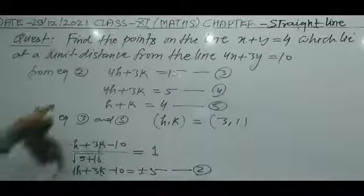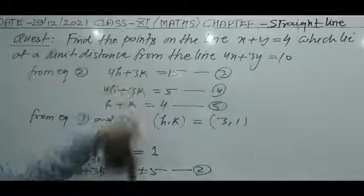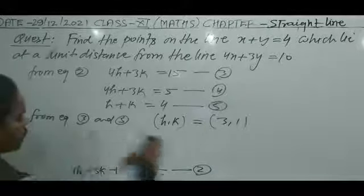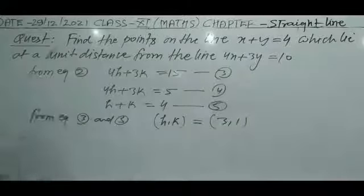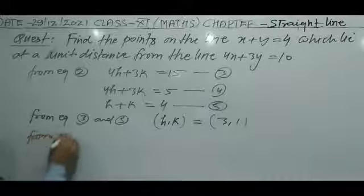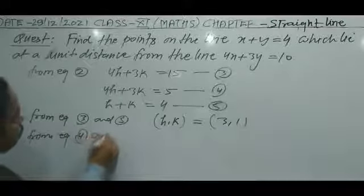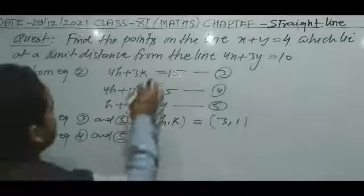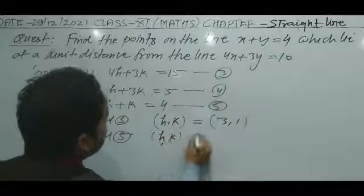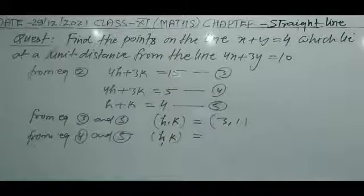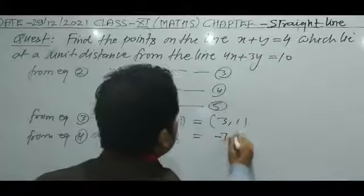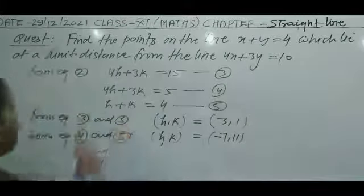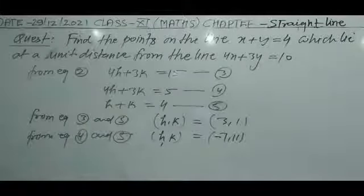From equations 4 and 5, solving simultaneously, the H comma K point will be minus 7 comma 11. So the result gives two coordinates: (3, 1) and (-7, 11).